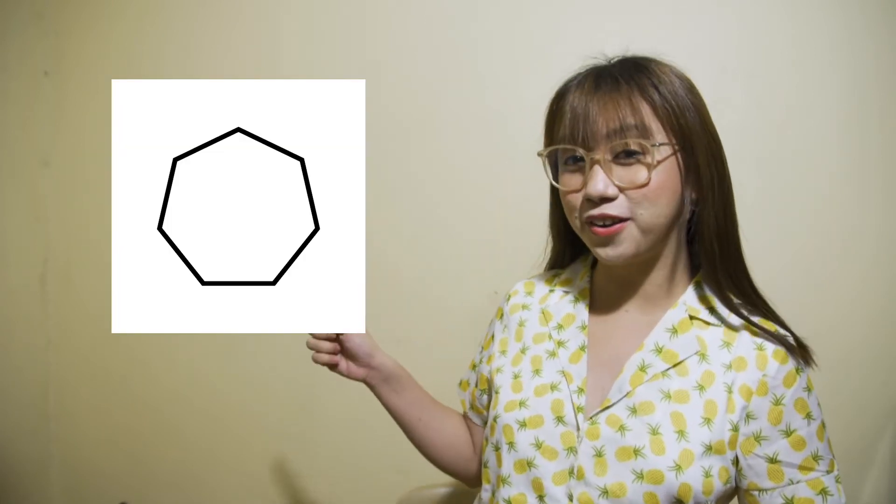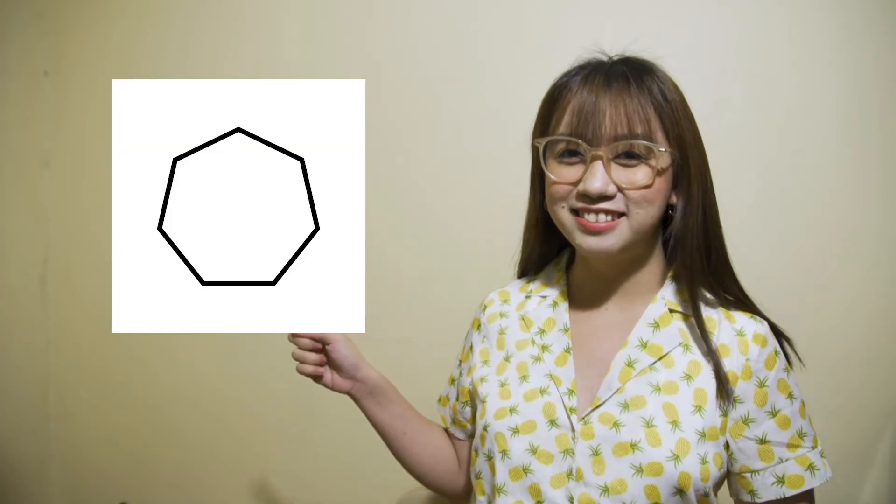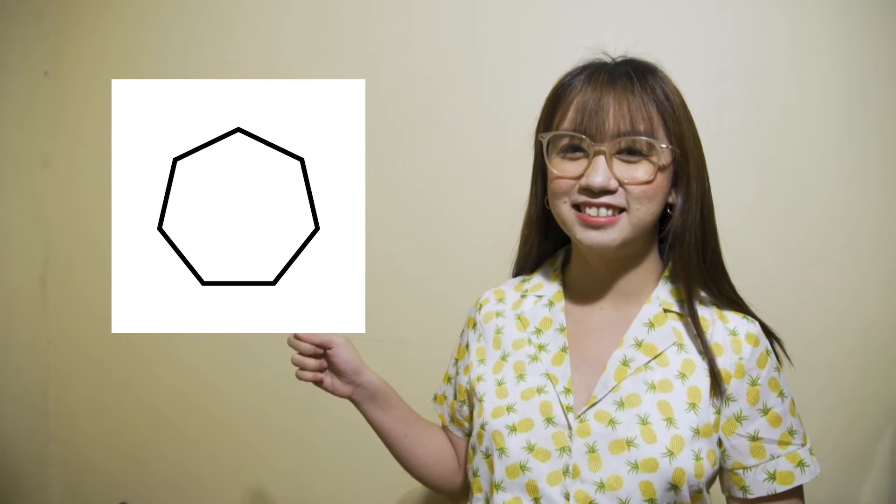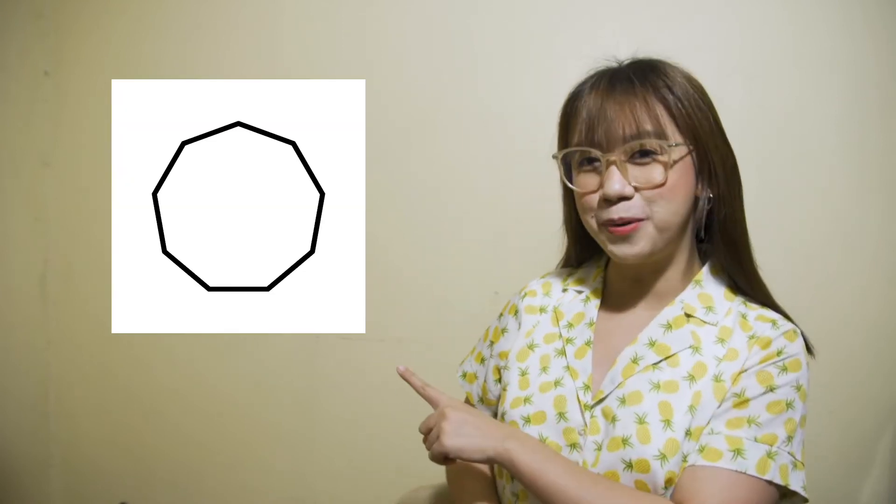Can you name this polygon? This is a heptagon because it has seven sides. The number of triangles formed in a heptagon is five, and its total angle measurement is 900 degrees.